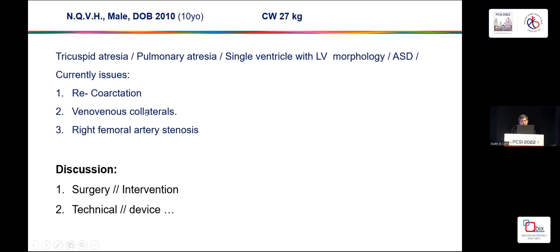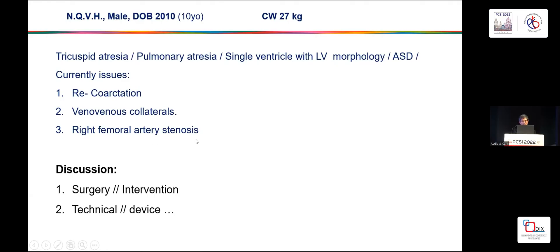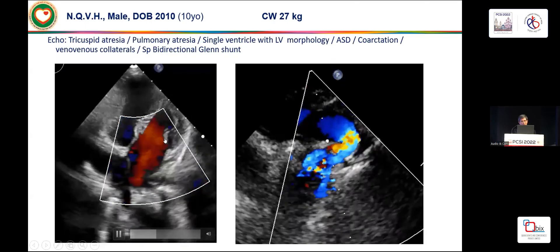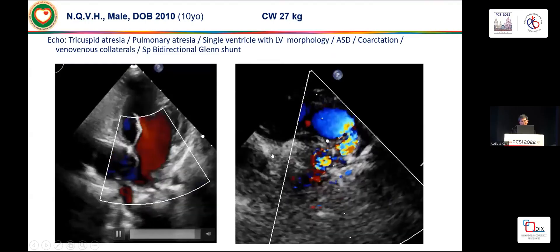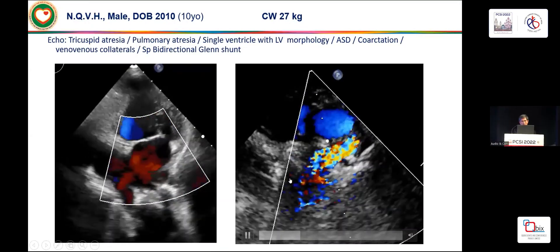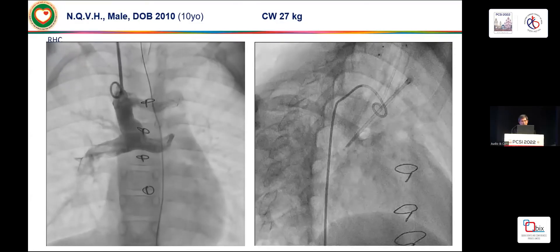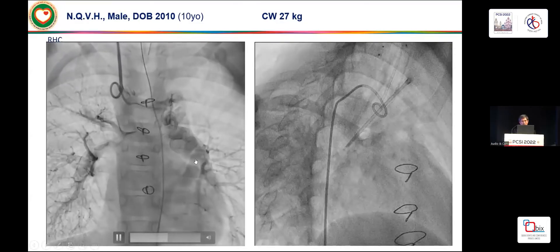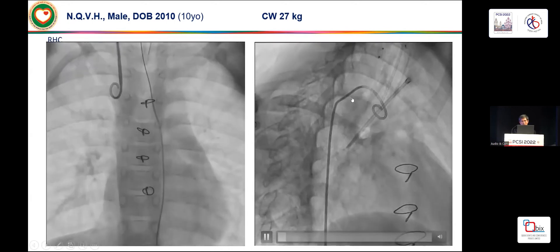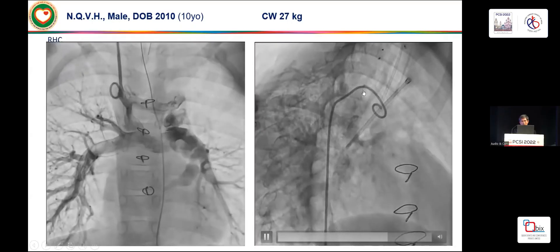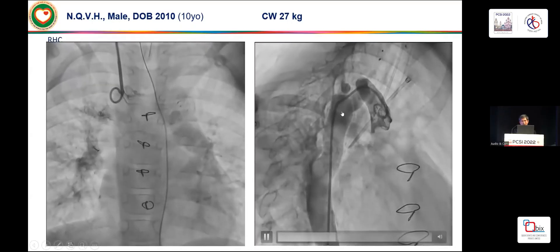The second case is a complex patient with tricuspid atresia, pulmonary atresia, and single ventricle with LV morphology. The patient had prior coarctation surgery, now with recurrent coarctation, multiple veno-venous collaterals, and subclavian artery stenosis. On echo, you can see a single ventricle on the left side with severe coarctation. The patient had right axis deviation and very unusual, complex morphology.